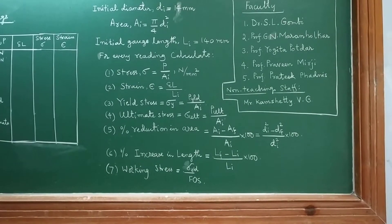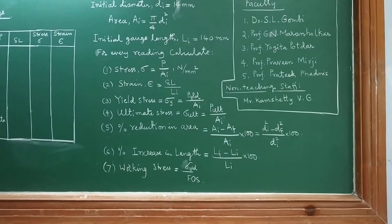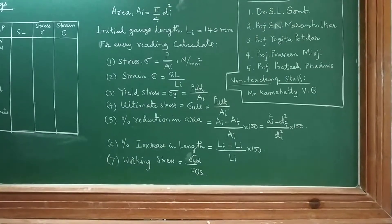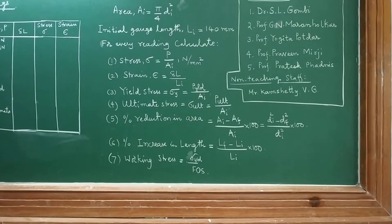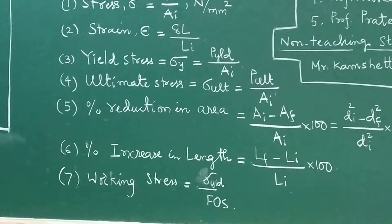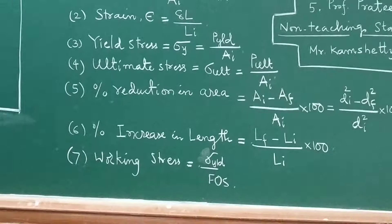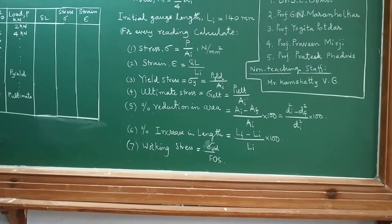Next, we have to calculate percentage increase in length, which equals final length minus initial length upon initial length into 100. Then finally, we have to assume a factor of safety of 2, and you pick up the yield point load divided by the factor of safety to get the working stress.